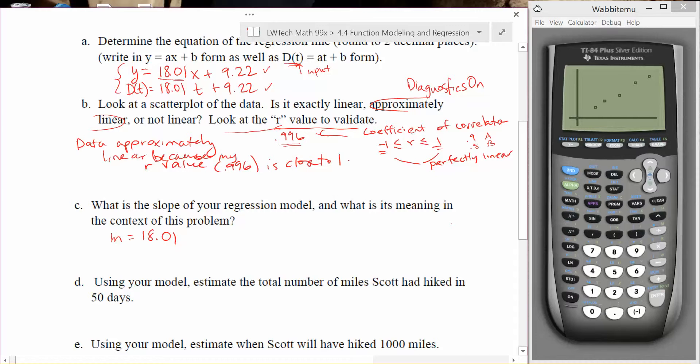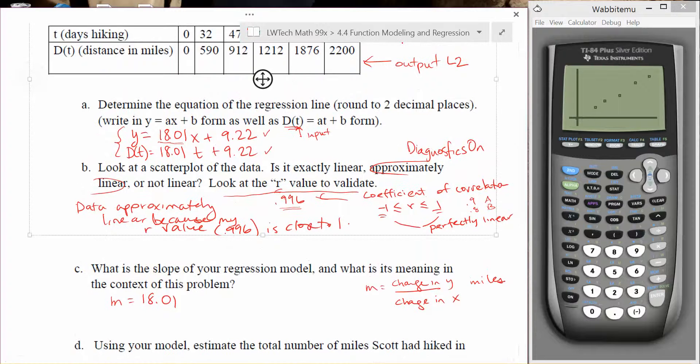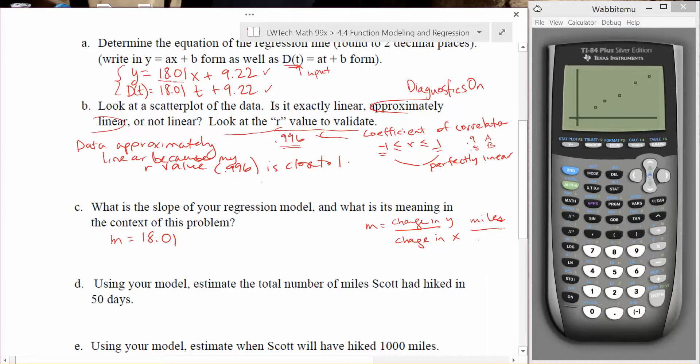The next part of this problem asks us to identify the meaning in the context of the problem. Generally, just talking about this in terms of units is really helpful. Remember that the slope is always found by taking the change in y units divided by the change in x units, or inputs and outputs if you want to think of it that way. So if we go up here, what I'm looking at is the change in the number of miles, which was my output variable, and then I want to divide that by the change in time, which is the number of days. So if you look at it like this, miles per day, that's exactly what this number is saying, is that Scott was walking approximately 18.01 miles per day. Sometimes he'd do a little bit better, sometimes he'd do a little bit worse, but according to our equation model, the very best fit model, it was about 18.01 miles per day.